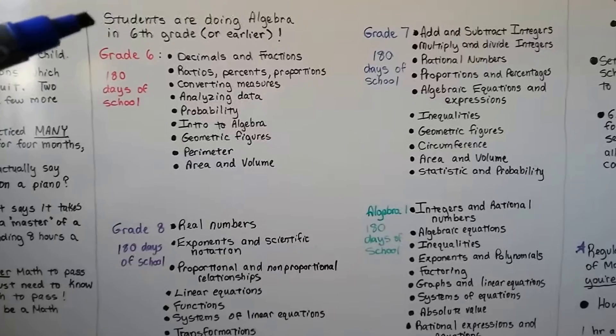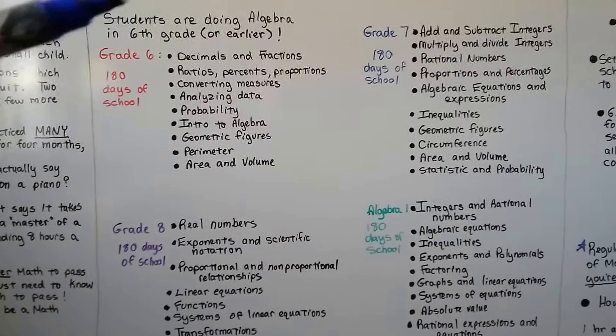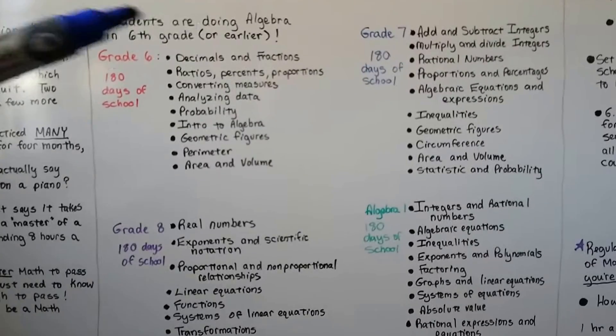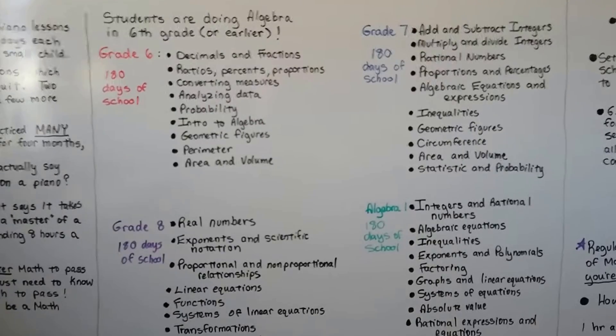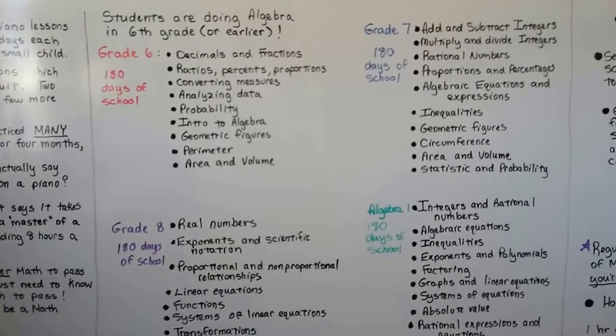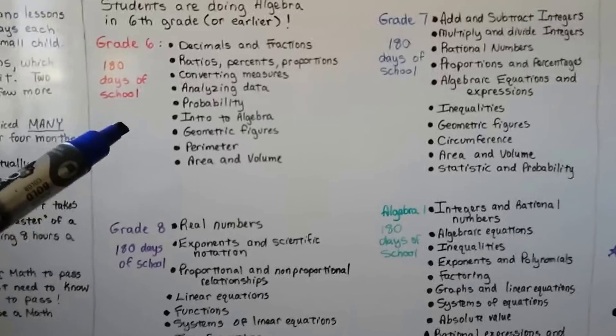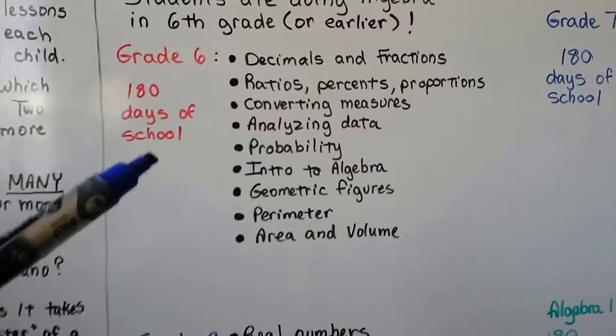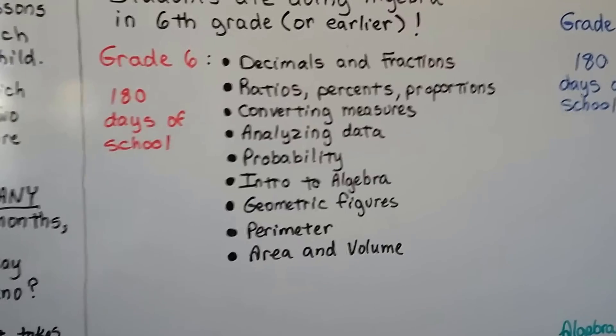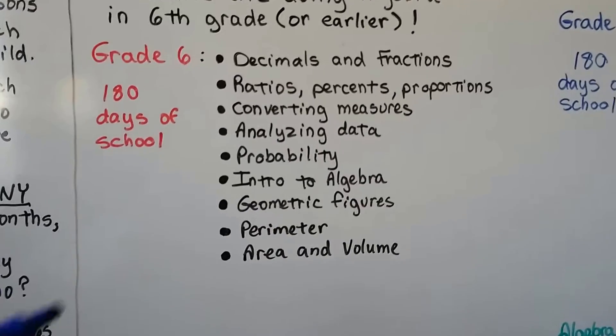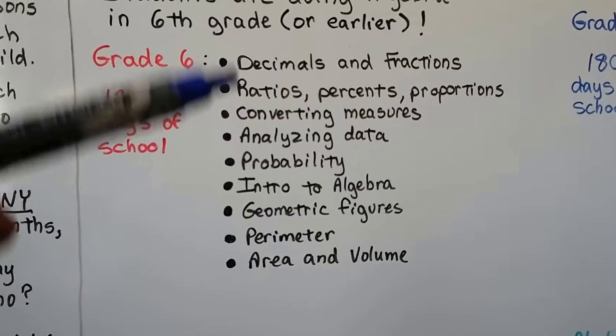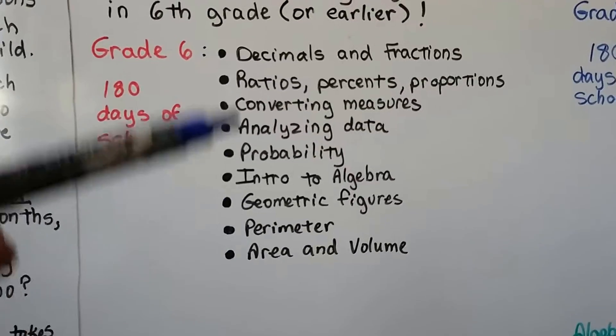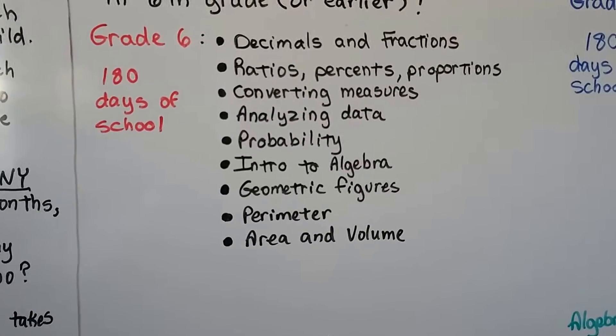Students are doing algebra in grade six or earlier. I actually have textbooks for third grade that have variables in them. They don't have little boxes with blank spaces. They're actually doing variables in third grade. So in grade six, sixth grade, if there's 365 days in a year, 180 of those days are school. And the sixth grader is going to learn this over the 180 days. And see how familiar these are? These are a lot of the lessons in the GED book, aren't they?